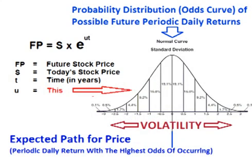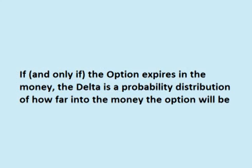An option's Delta is derived using probability. One can create a probability curve of what the future value of the stock will be. For a call option, the Delta is derived from a probability distribution of what the future value of the stock will be, multiplied by the probability that the stock will be above the option strike price. Put another way, if and only if the option expires in the money, the Delta is a probability distribution of how far into the money the option will be. In the next video, we will compare buying a call option to selling a put option. Thanks for watching.